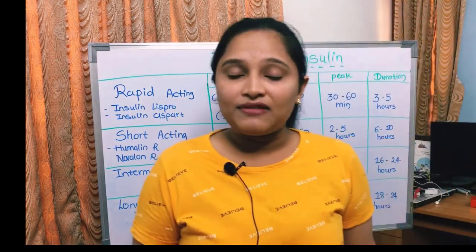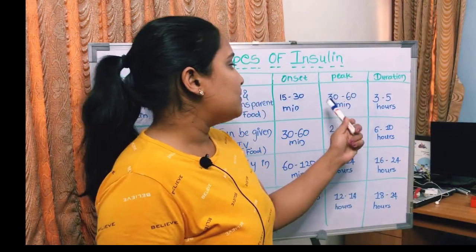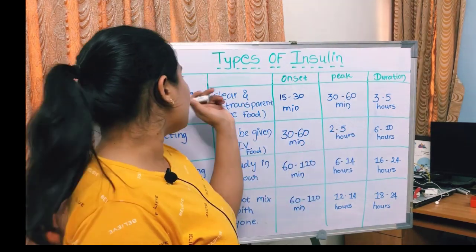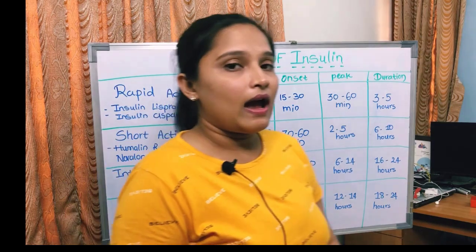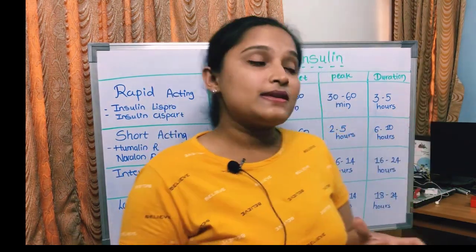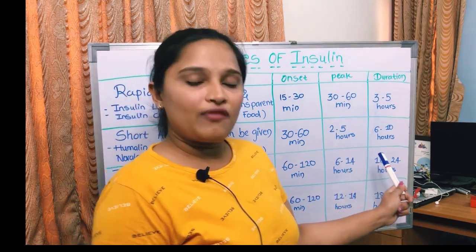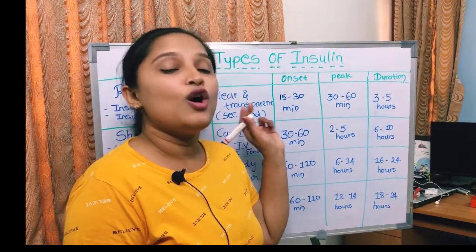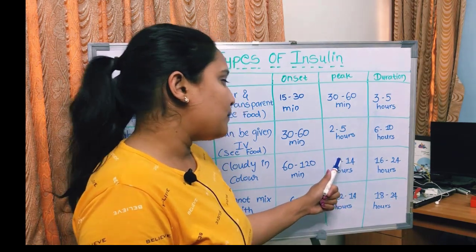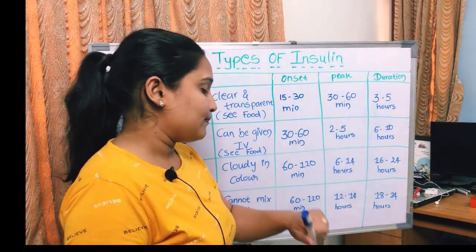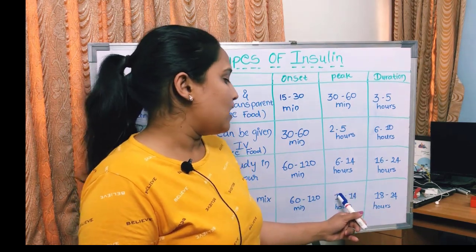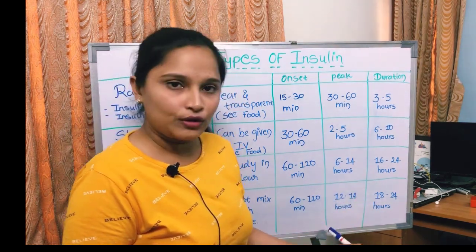The peak effect comes at 30 to 60 minutes of administration for rapid acting insulin. For short acting insulin, the peak effect comes at 2 to 5 hours. For intermediate acting insulin, the peak effect comes between 6 to 14 hours. For long acting insulin, the peak effect comes between 12 to 14 hours.